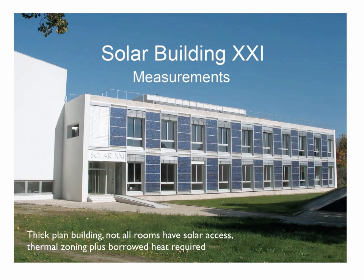Here's a building that's a bit thicker: Solar Building 21, a research building in Portugal. Not all rooms have solar access, so we use thermal zoning and need to borrow and move heat. On the south-facing facade, you've got direct gain windows alternating with photovoltaics in the vertical plane. The PV panels are only about 15–18% efficient — what's left is ordinarily waste heat going to atmosphere. In this case there's an airspace behind, making it a combination PV system and air collector that recovers the waste heat from behind the panels.